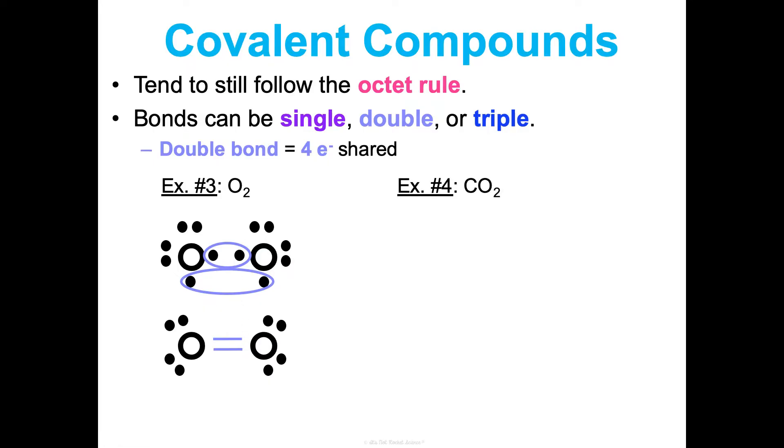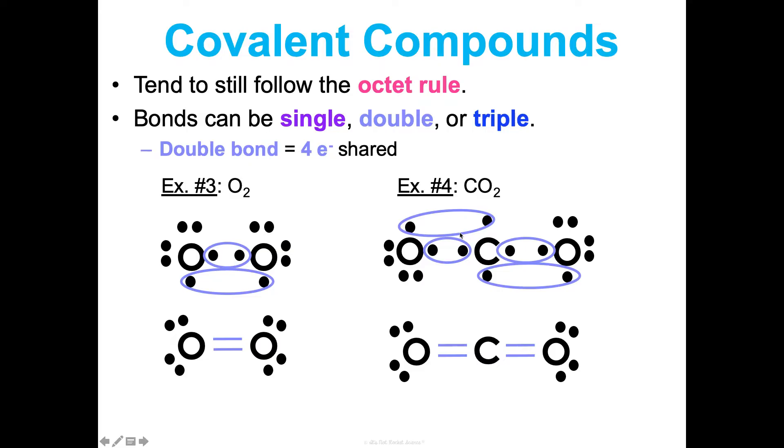We see this similarly in carbon dioxide. So you have one carbon and two oxygens. And now you may be thinking, how did I know to put carbon in the middle? So the least electronegative atom always goes in the middle with the exception of hydrogen, which is never in the middle. So carbon has a lower electronegativity than oxygen, so it's going to go in the middle. So it's going to share two electrons with this atom and two electrons with this atom, which makes four total on either side. So we end up with these double bonds on either side, a double bond with this oxygen and a double bond with this oxygen. And here carbon has no lone pairs. It only has bonding pairs, which is interesting.